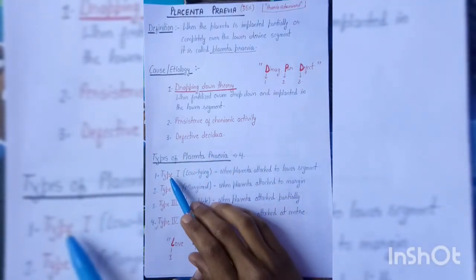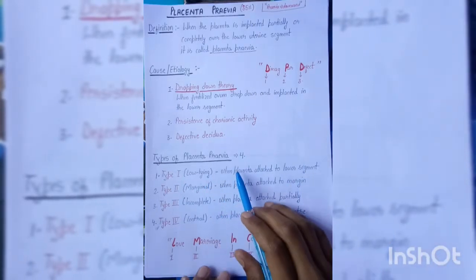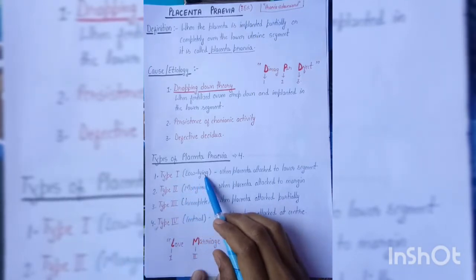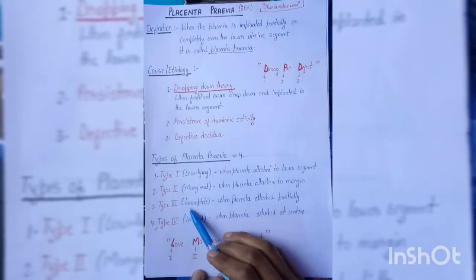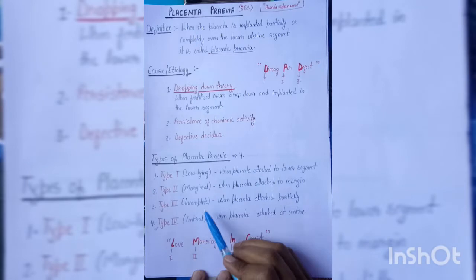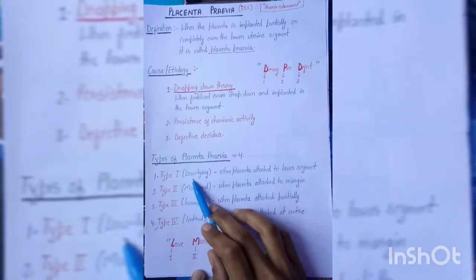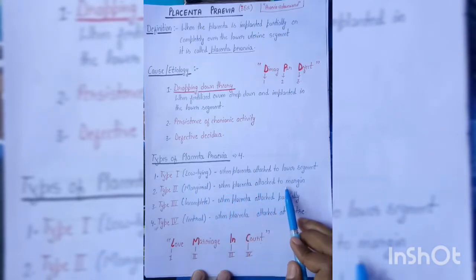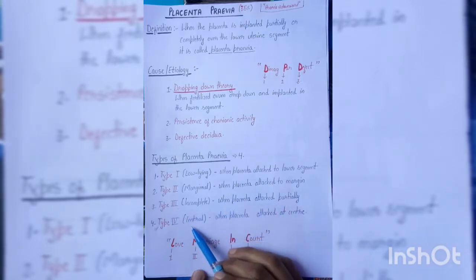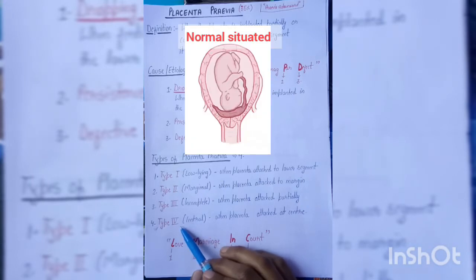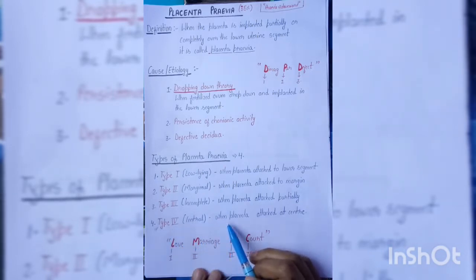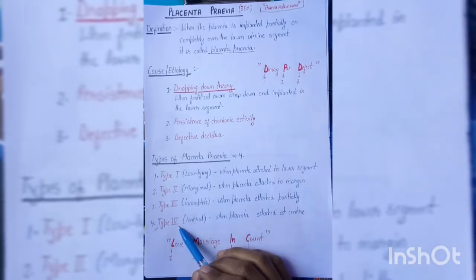There are four types of placenta previa: Type 1 is lower lying, Type 2 is marginal, Type 3 is incomplete (partial), and Type 4 is central. Lower lying is when placenta is attached to the lower segment; marginal when at the margin; incomplete when partially covering; and central is the abnormally situated type fully covering the os. We can remember this with the mnemonic 'love marriage in code'.